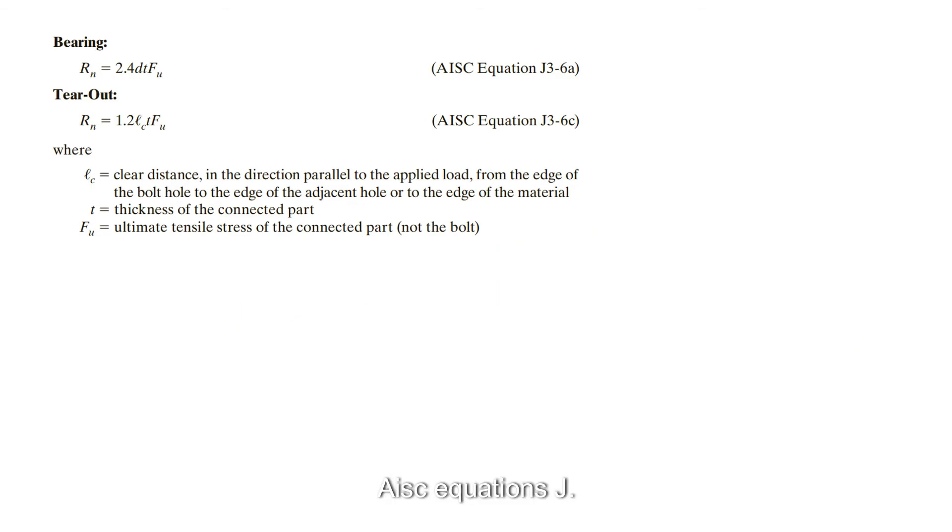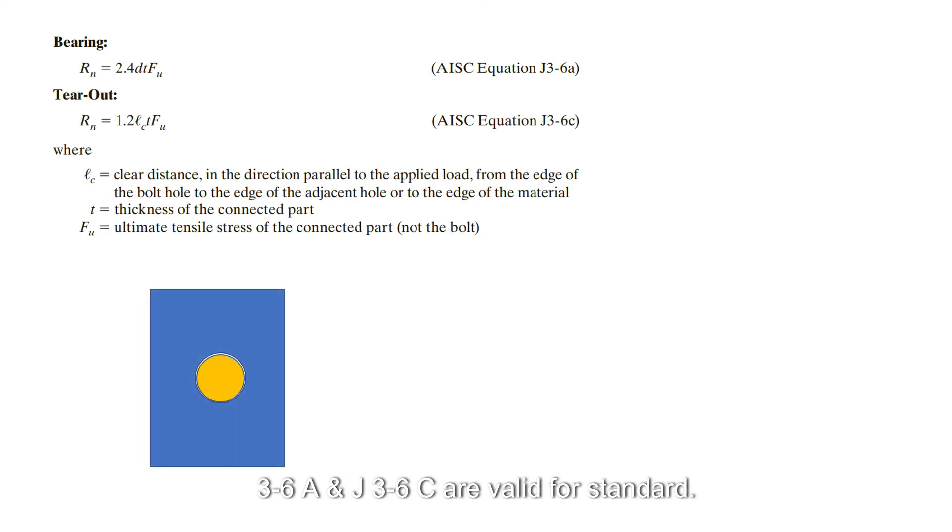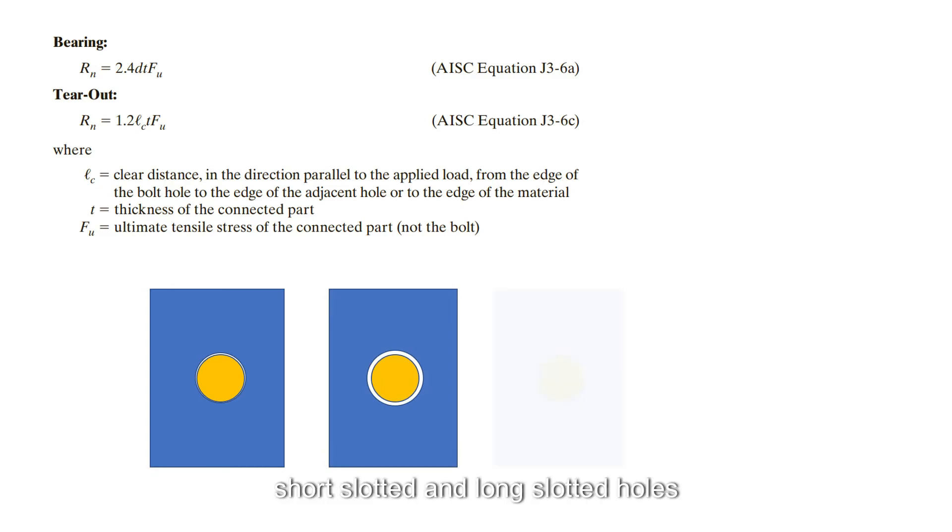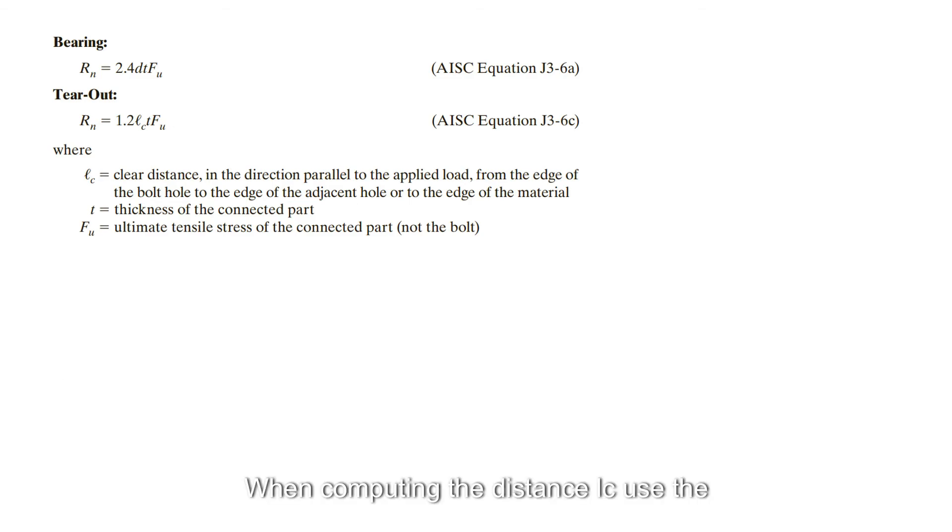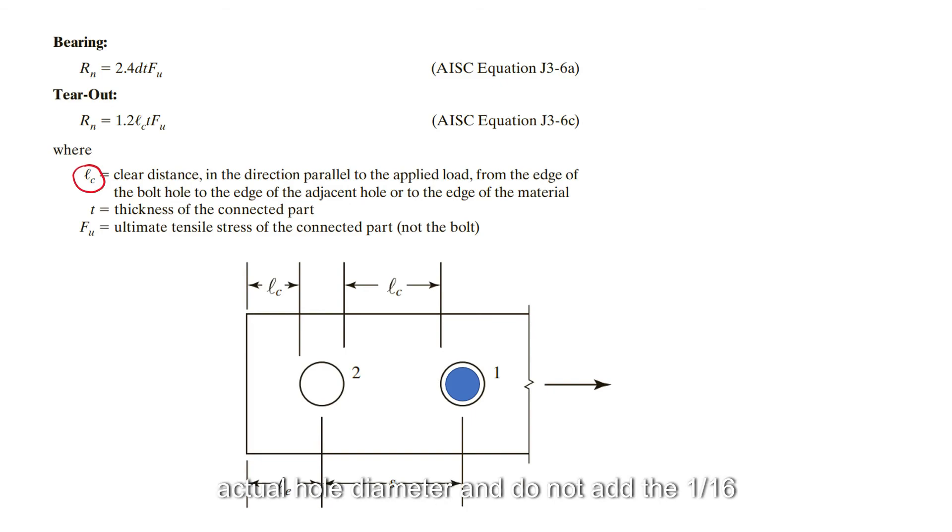AISC equations J3-6a and J3-6c are valid for standard, oversized, short slotted, and long slotted holes, with the slot parallel to the load. When computing the distance L sub c, use the actual hole diameter, and do not add the 1/16th inch as required in AISC for computing the net area for tension and shear.